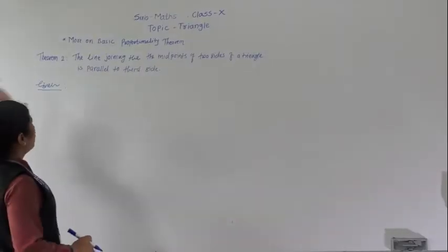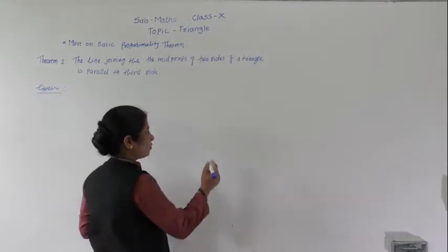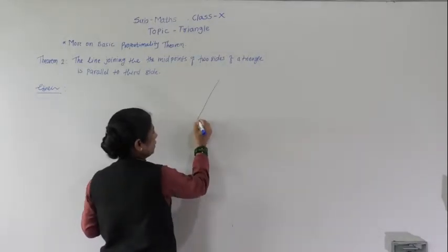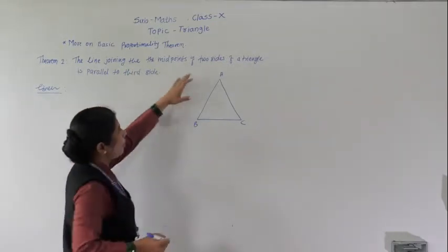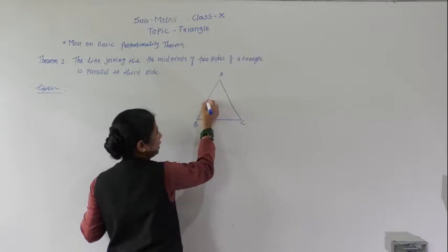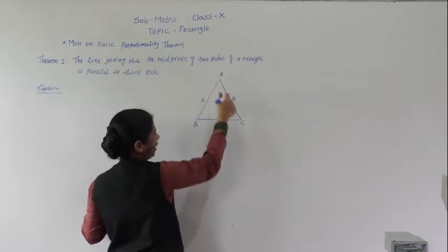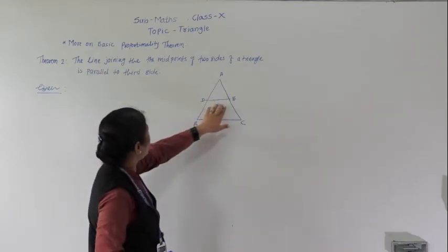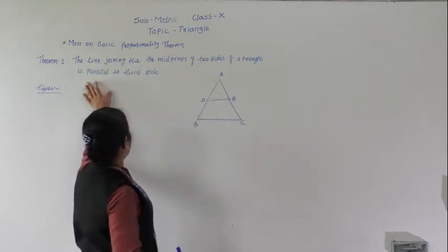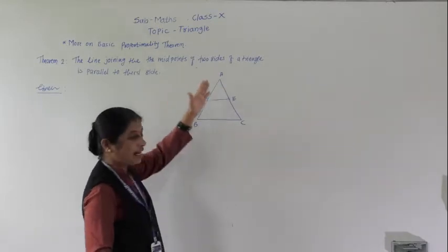Next theorem: the line joining the midpoints of two sides of a triangle is parallel to the third side. First we will draw triangle ABC. D and E are the midpoints of AB and AC respectively. We join D and E.